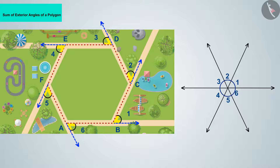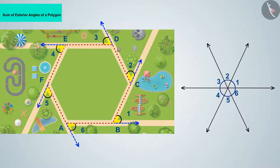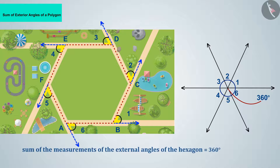In this way, you complete one round by walking outside the garden. When connecting all the angles formed, they represent a circle. We know that the total measure of angles at the center of a circle is 360 degrees. So the sum of measurements of the external angles of the hexagon is 360 degrees.